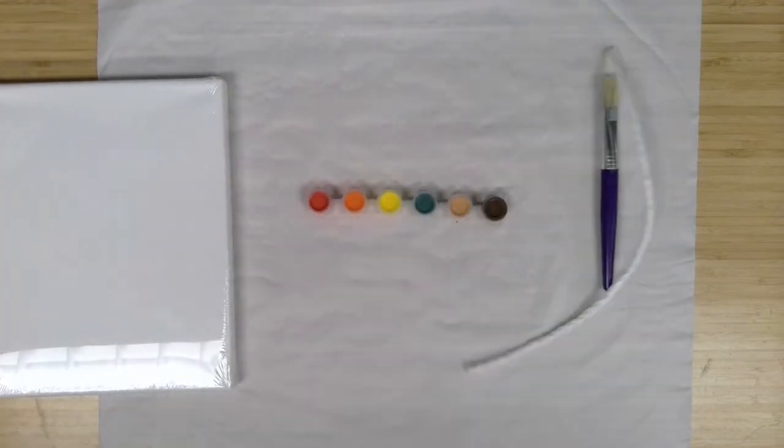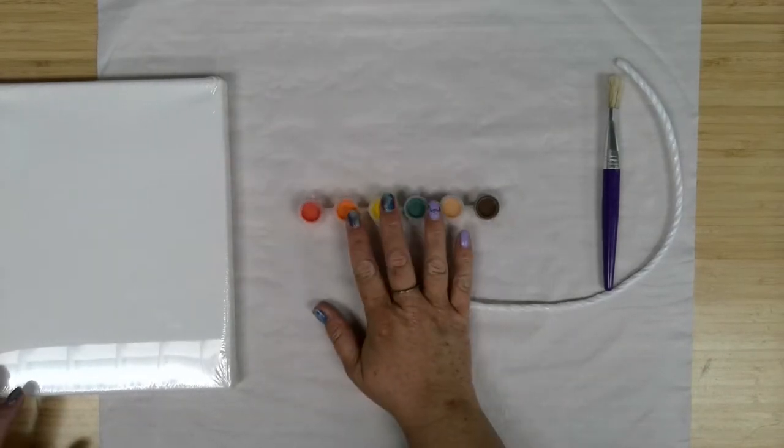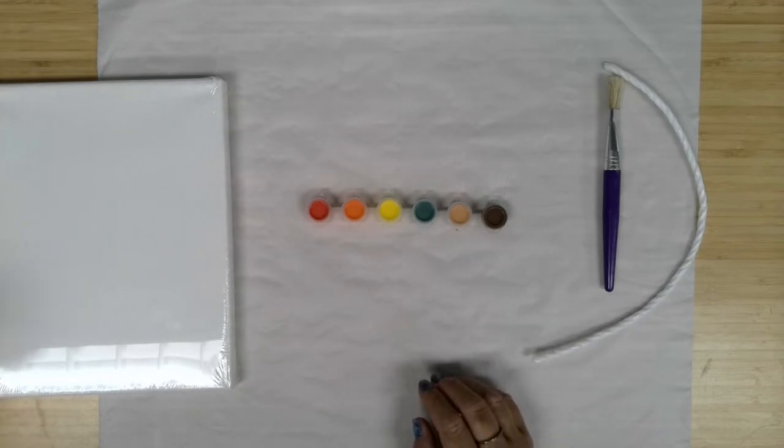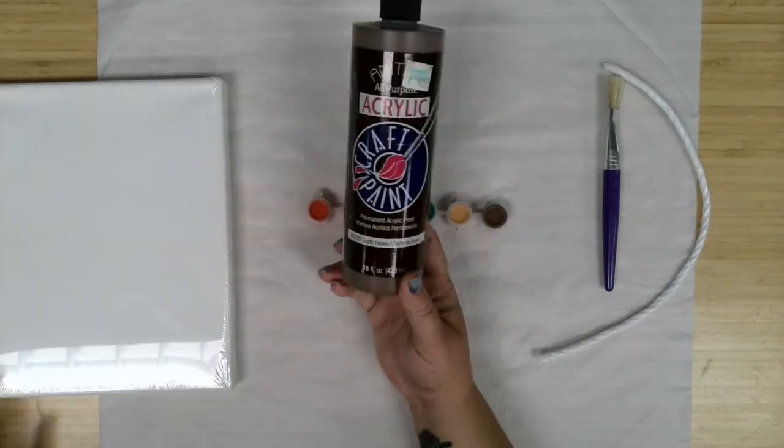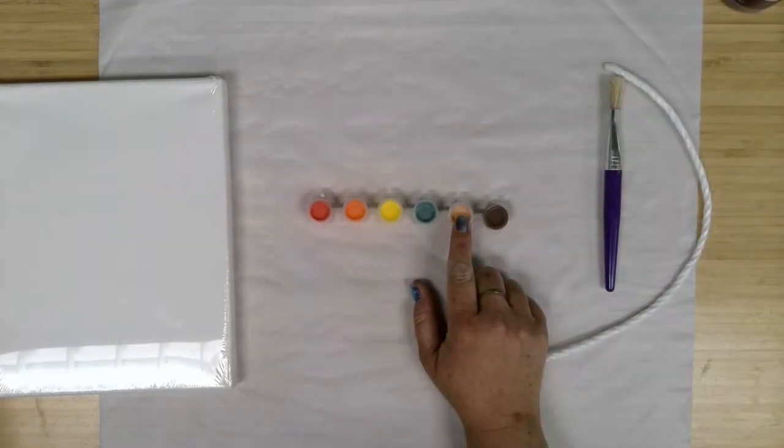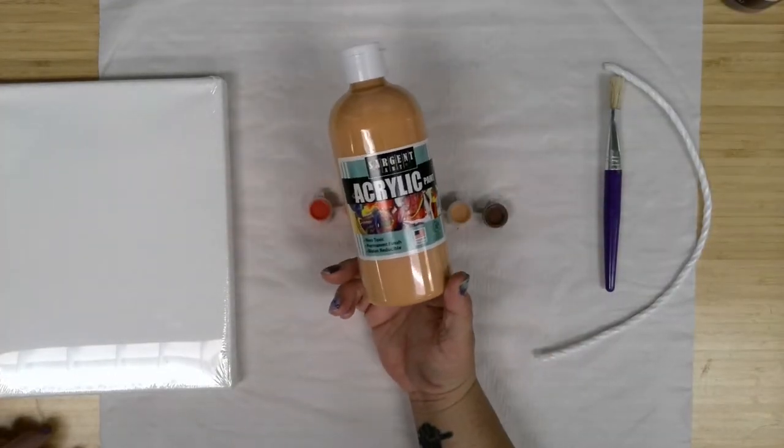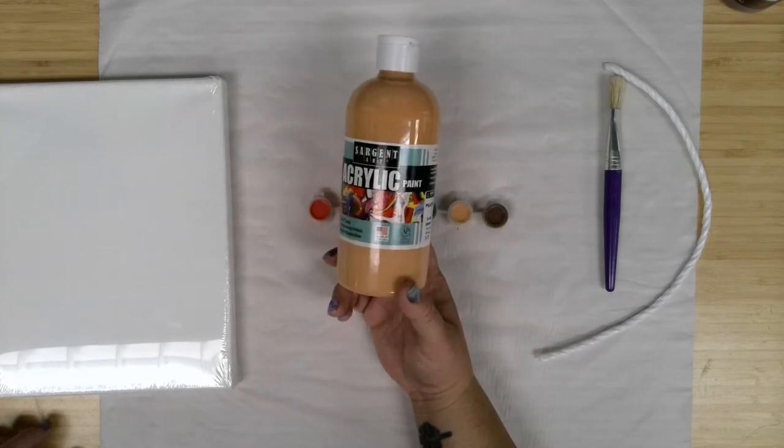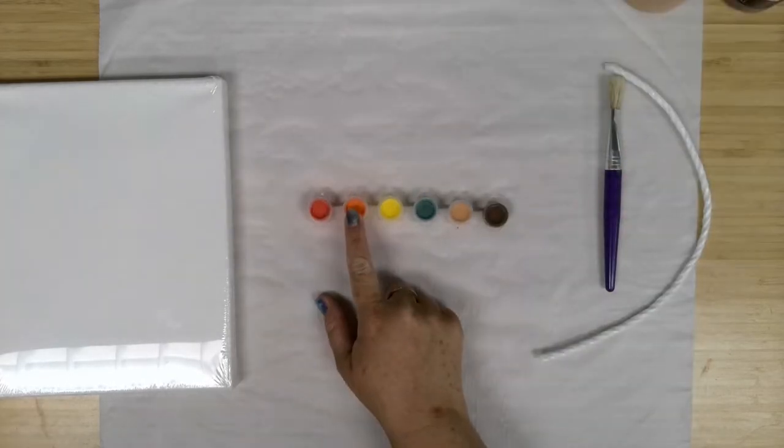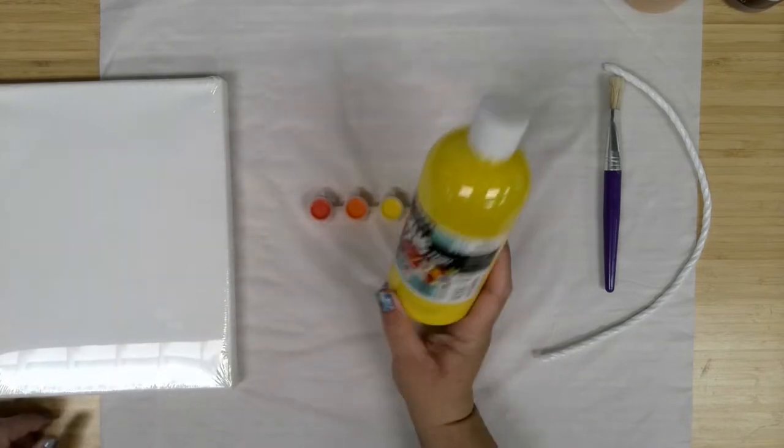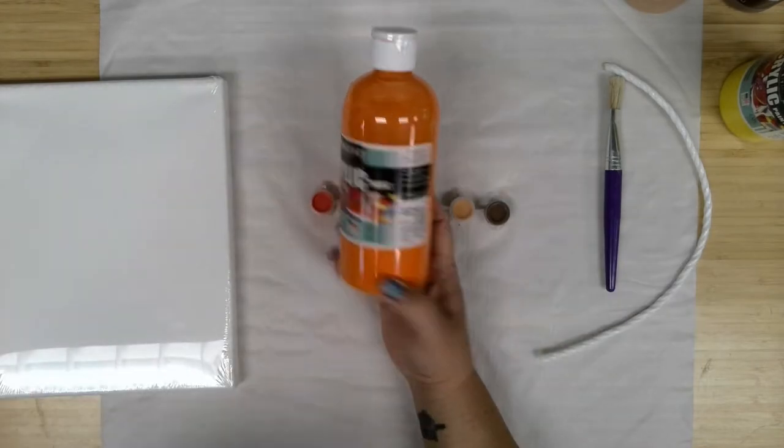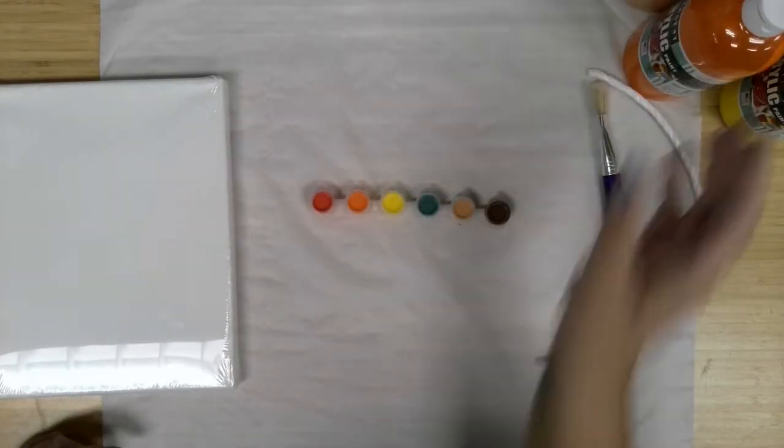And then we have our paints here. I'm going to show you the actual paints we're using. For the brown, I had leftover Anita's all-purpose earth brown. The peach is Sargent peach color. Then we get into the sunset colors - spectral yellow from Sargent and spectral orange.